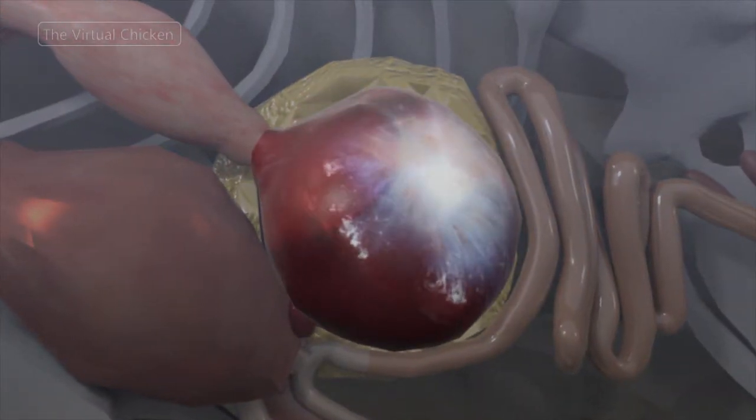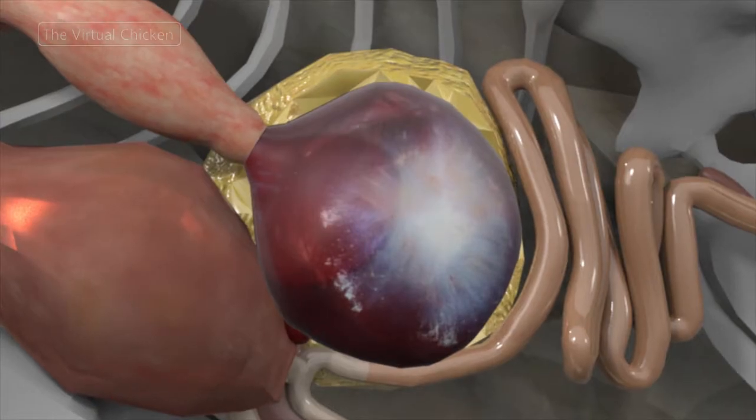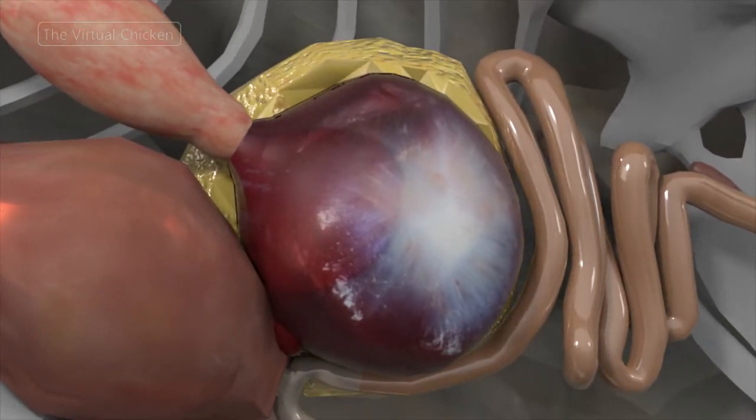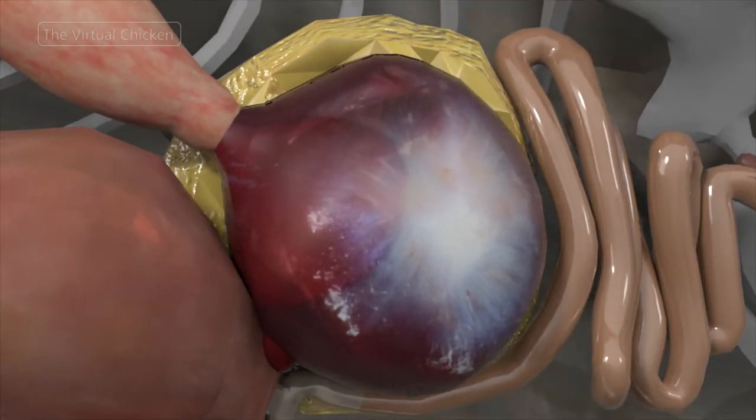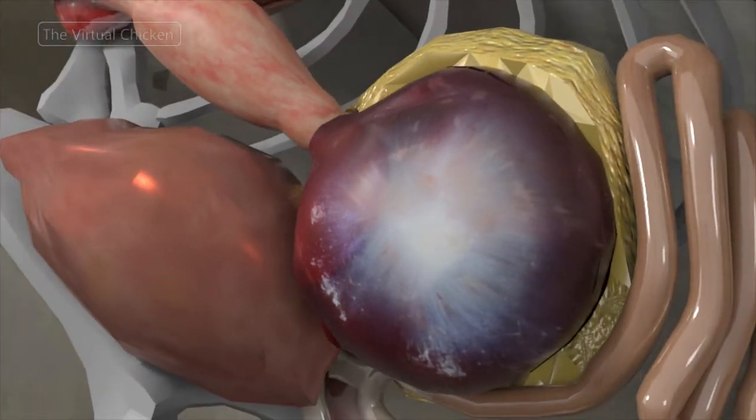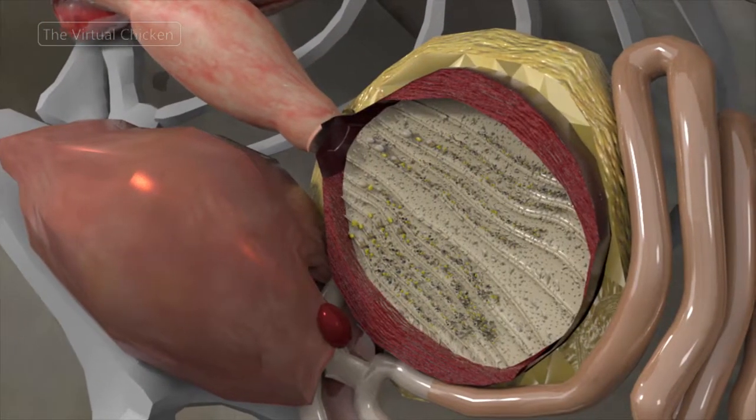It's a round organ with two lobes, one larger than the other. Each surface of the gizzard is covered by a shiny layer of tendinous tissue which is thicker at the center and thinner out by the edges.